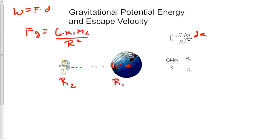Now, we can pull out all the constants in front of our integral. So I'm going to pull out a G, an M, and a little m, and then we're going to integrate from R1 to R2 of 1 over R squared dr.